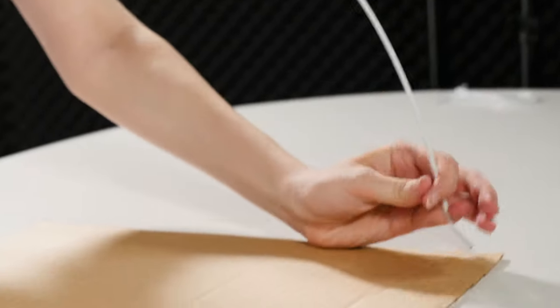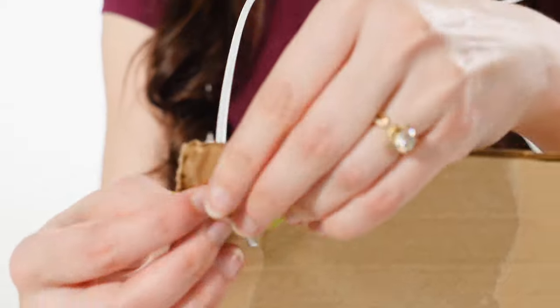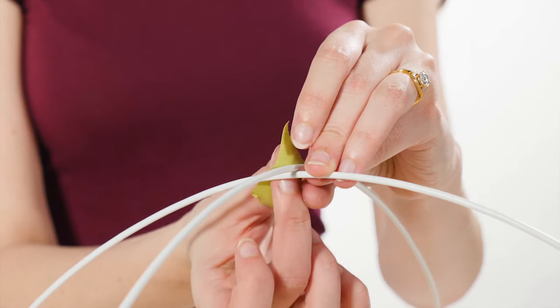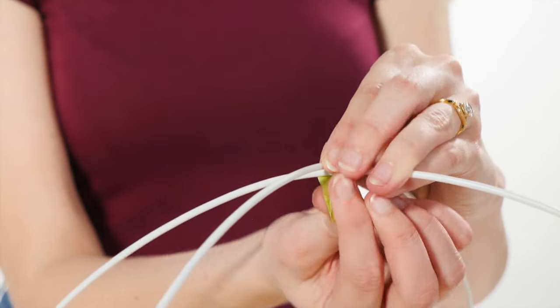Do the same thing with the other end of your wire on the opposite corner. Once you've completed this, you should have an arch going across your piece of cardboard.